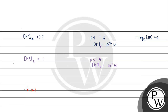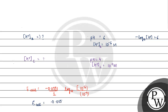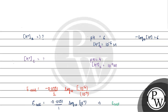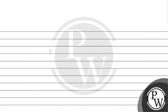Now the Nernst equation gives us: E_cell equals 0.0591 divided by 1, log base 10 of (10 raised to the power minus 6) divided by (10 raised to the power minus 4). This equals minus 0.0591 divided by 1, log base 10 of 10 raised to the power minus 2, which equals 2 multiplied by 0.0591. So E_cell equals 0.1182V.